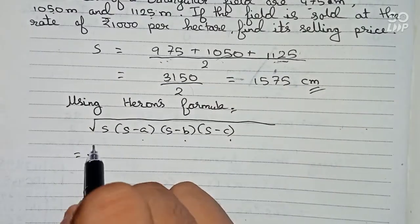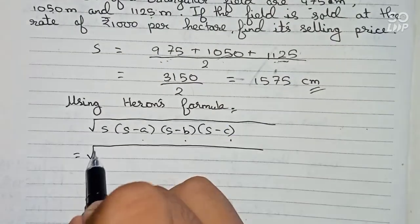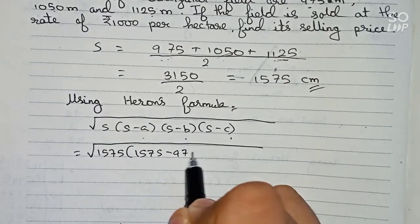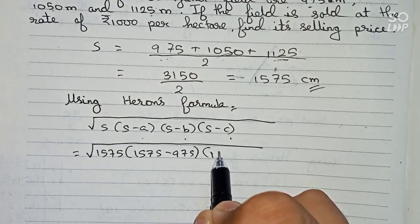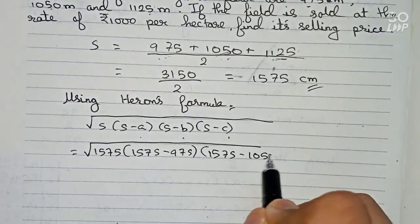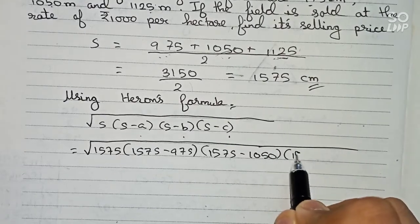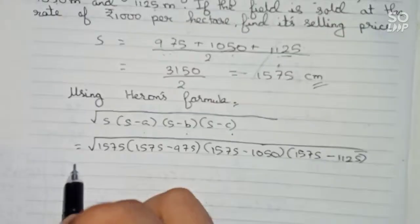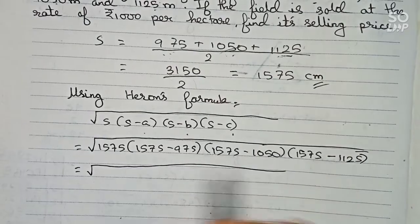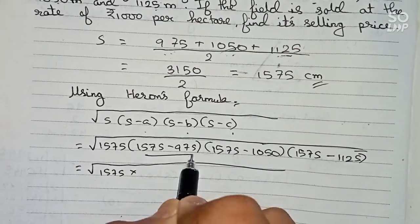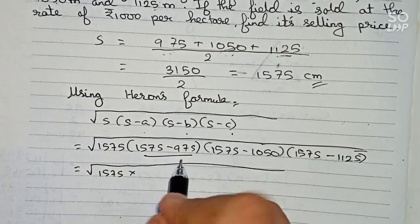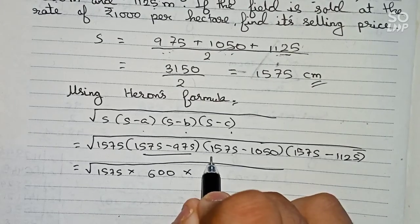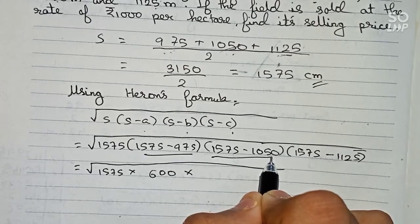So we put down the values: square root of 1575 multiplied by (1575 minus 975) multiplied by (1575 minus 1050) and finally (1575 minus 1125). So 1575 multiplied by, here it will become 600. 1575 minus 975 will become 600, multiplied by 1575 minus 1050 will become 525, and finally 1575 minus 1125 will become 450.